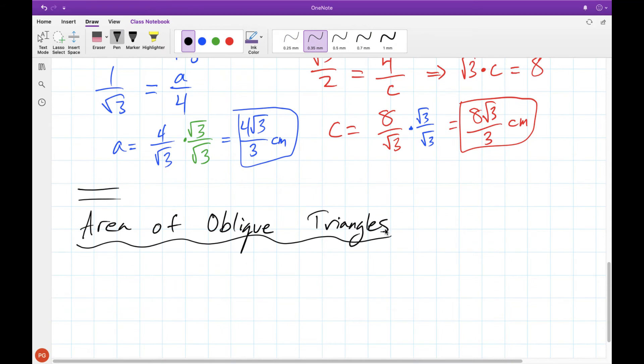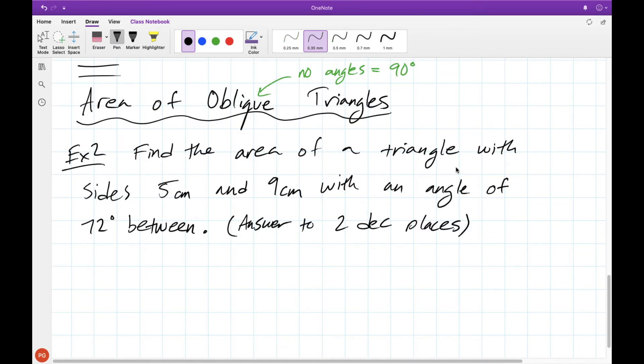To start with we're going to be doing area problems, so finding the area of triangles. This word oblique here just means that there are no 90 degree angles inside our triangle. So our second example here is to find the area of a triangle with sides of 5 centimeters and 9 centimeters and an angle of 72 degrees between them. We're answering to two decimal places here.